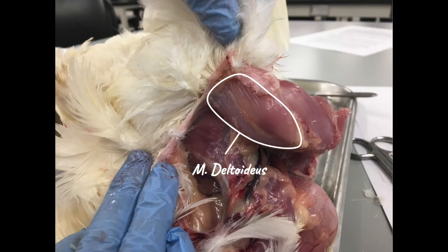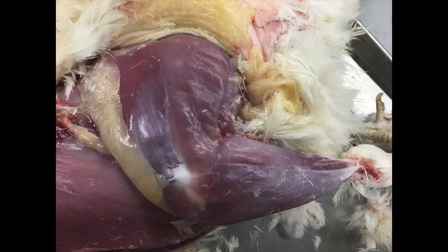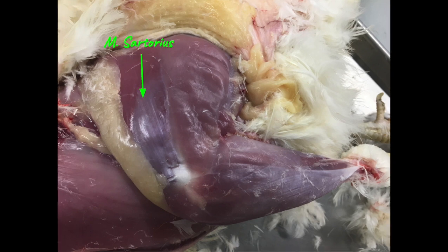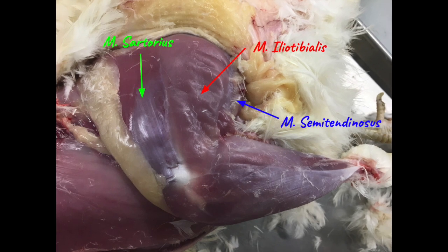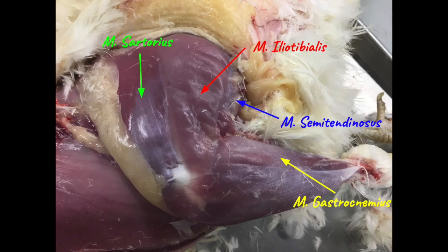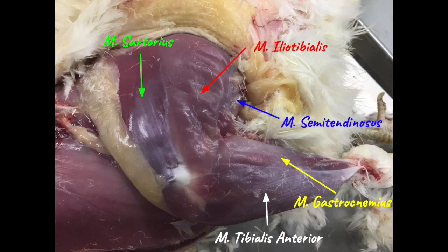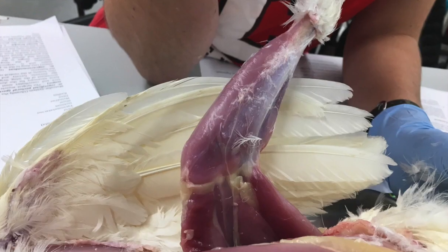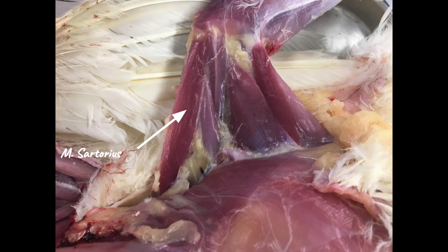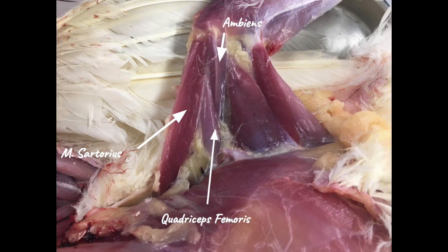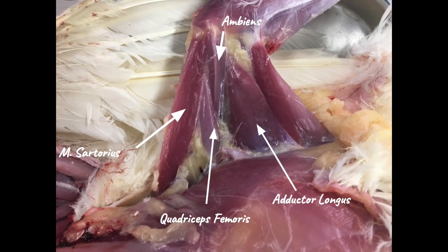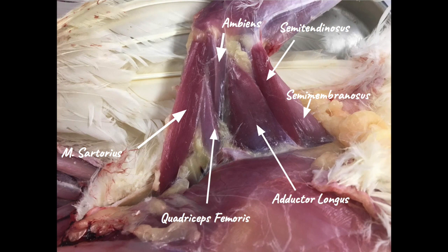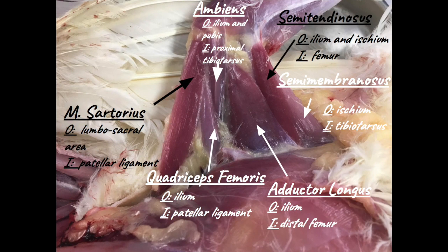This is the deltoideus muscle, behind the shoulder of the chicken. Next are the muscles of the thigh and leg. These include sartorius, iliotibialis, semitendinosus, gastrocnemius, and tibialis anterior. In addition to sartorius and semitendinosus, here you can also see quadriceps femoris, ambiens, adductor longus, and semimembranosus. Their origins and insertions are shown here.